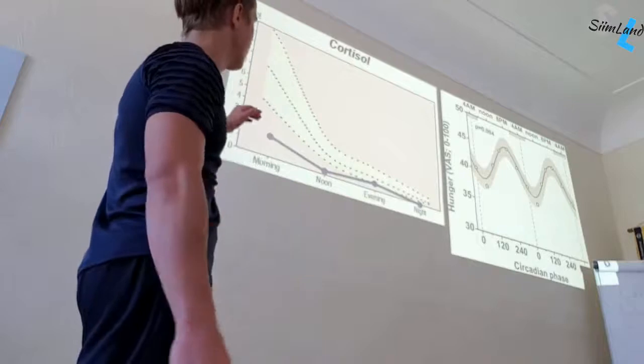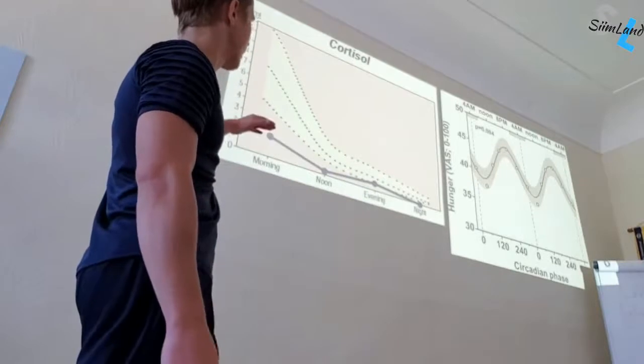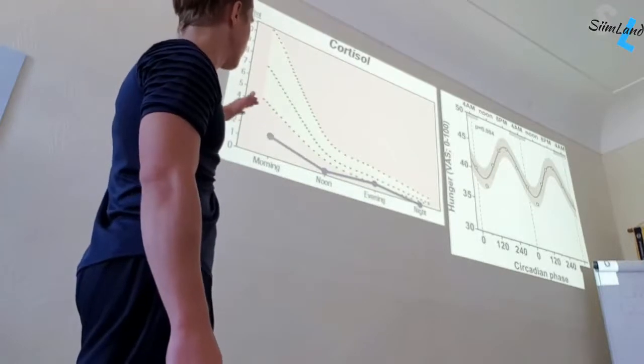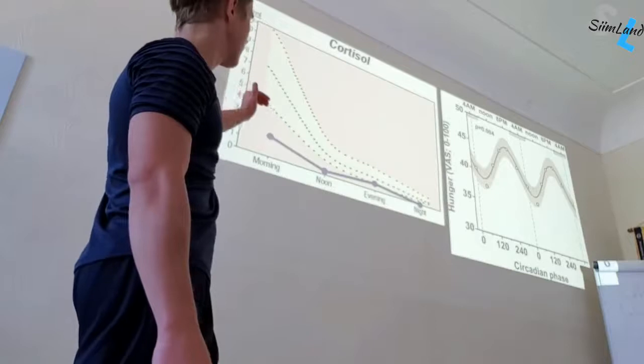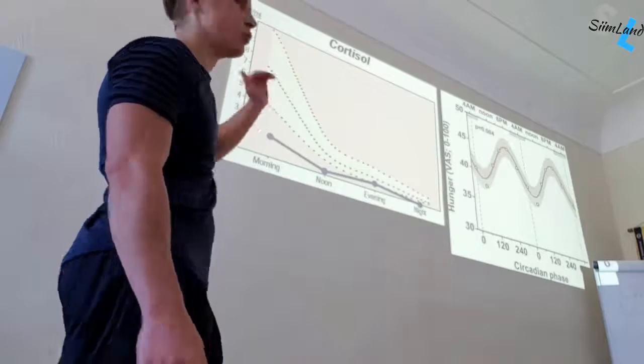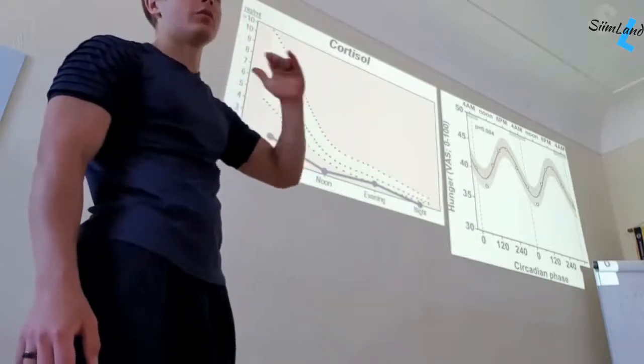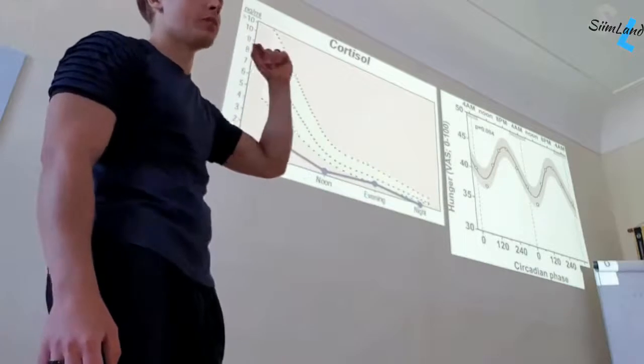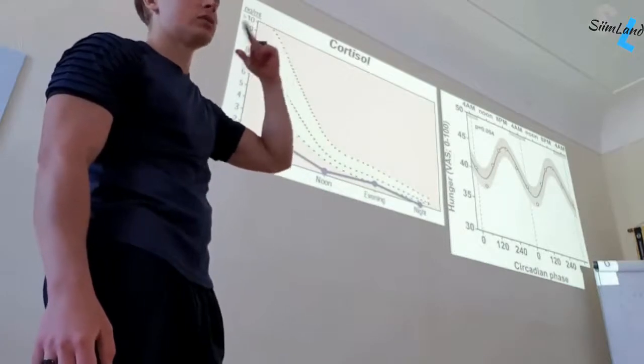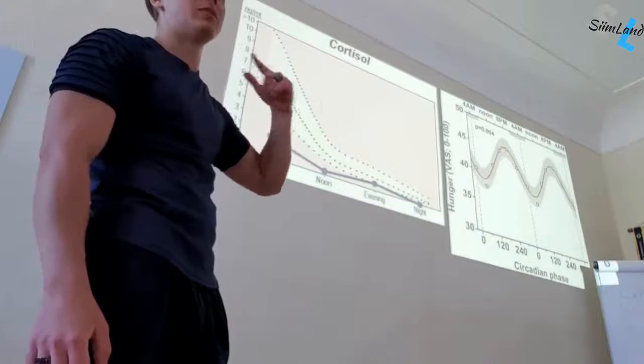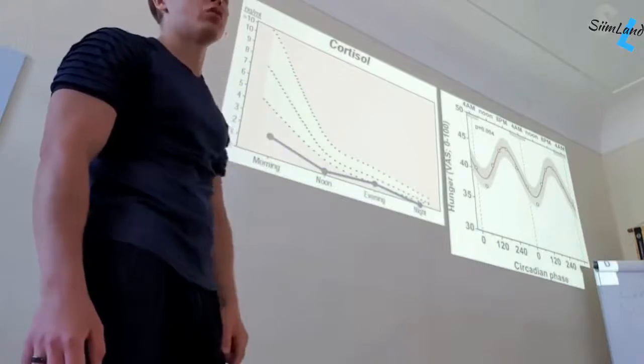Generally, cortisol is going to start lowering throughout the entire day. It peaks in the morning, at noon is quite low, and during the night it's supposed to be quite low so that you could fall asleep. With too high levels of cortisol, if your brain is wired up, it won't allow your brain to go into these deeper stages of sleep. So that's a huge problem.